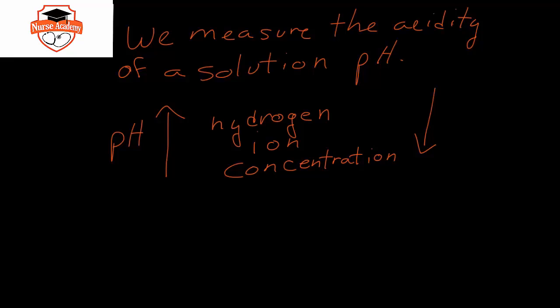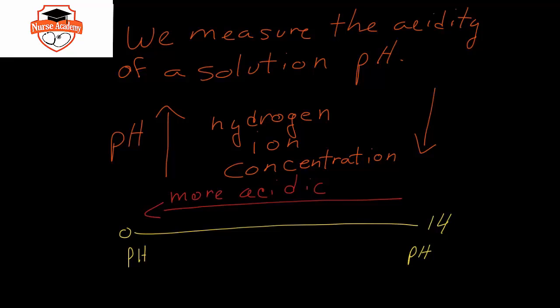And it goes in a range from pH 0 all the way to pH 14. And the more to the left that it has, the more acidic the solution is. And as the pH goes up, the more basic, or we could say alkaline, the solution is. And then right in the center at where the pH is 7, that is our neutral pH.